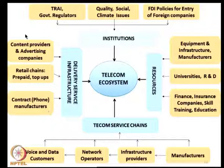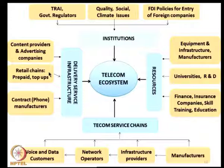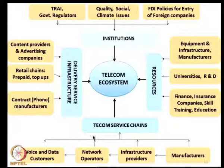In terms of delivery, infrastructure is very important. There are contract manufacturers for cell phones, content providers for advertising, and retail chains that sell prepaid top-ups and SIM cards. The telecom ecosystem is a very interesting one to map. You can take a specific operator like Airtel or BSNL and map the full ecosystem for that company.